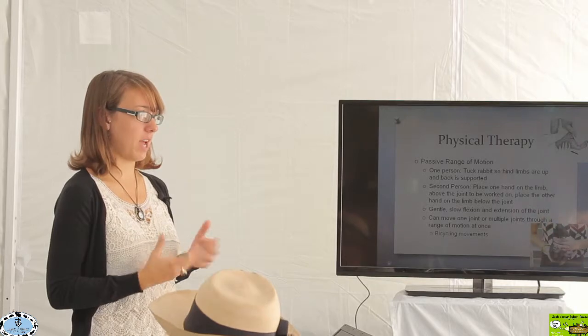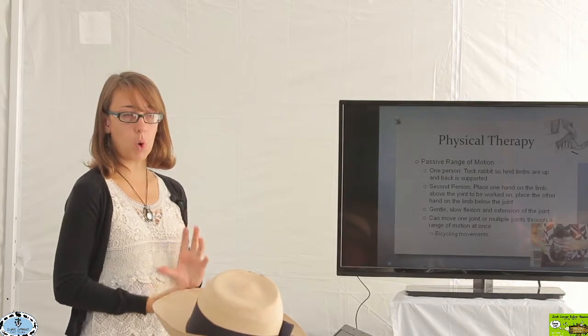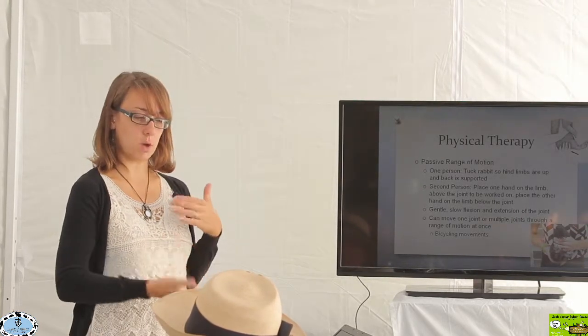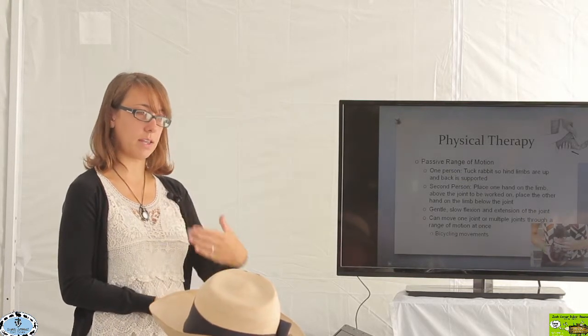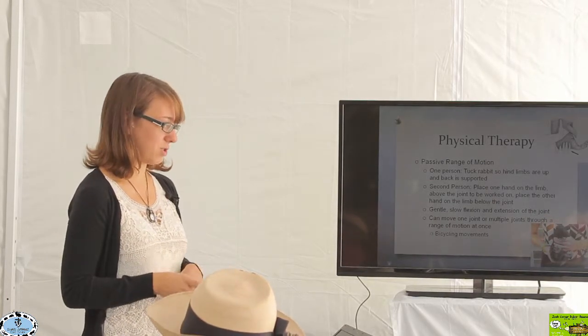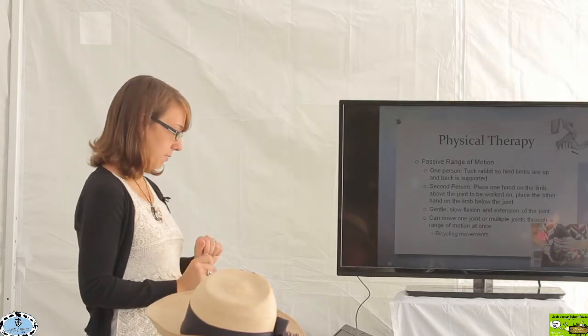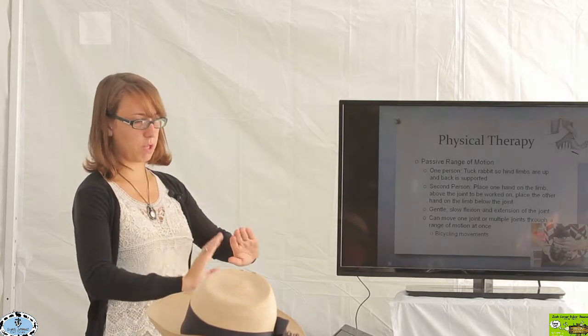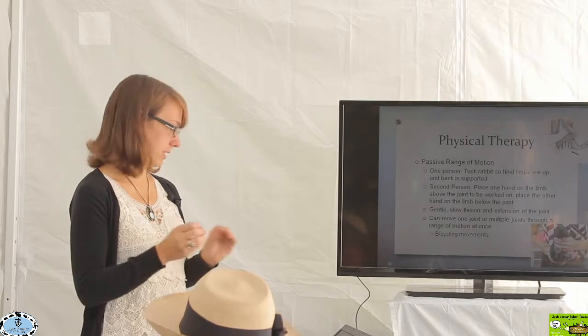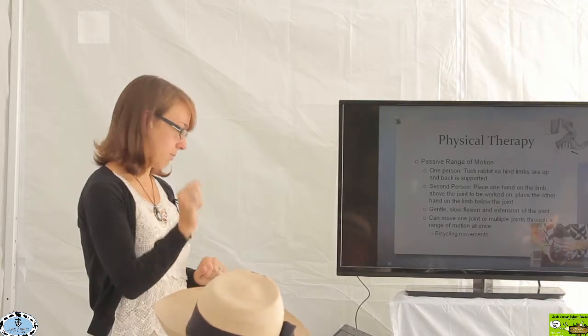So with passive range of motion I usually recommend that it be a two-person job. It seems to be a little bit easier that way. One person has the job of holding the rabbit and restraining the rabbit. I put a couple of pictures up of what that restraint looks like where one individual is holding the rabbit by tucking the bottom with one hand and then holding the rabbit with the other the forelimbs right over their other hand, and then the second person, that's the one who's actually doing the physical therapy. That person is placing their hands on the limb where they're going to be working and they're going to be putting one above the joint that's the problem, one below the joint that's the problem so that they can really work on that joint. They're going to then gently and slowly flex and extend that joint and sometimes you can do actual bicycle motions so rather than working on just one joint you can work on multiple joints to really get multiple joints moving.